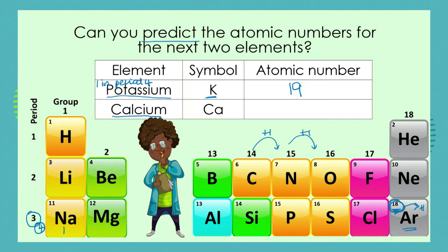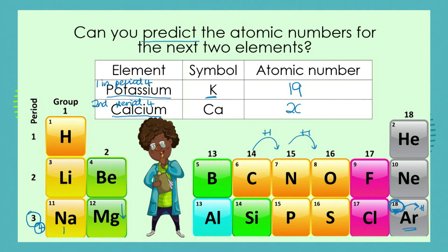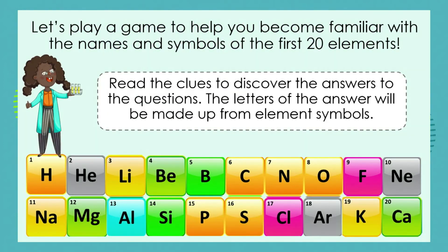Now can you predict the atomic number for the next element, which lies underneath magnesium and next to potassium along the row? It will be second in period four. Shout it out — what is the atomic number of calcium? Of course it's going to be 20, because our pattern is plus one as we go along a row. I'm sure you were really good at that!